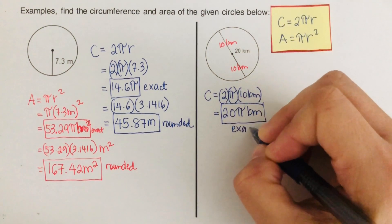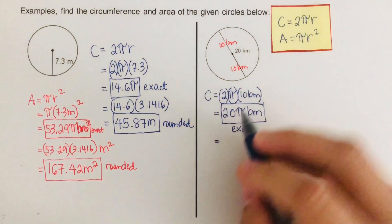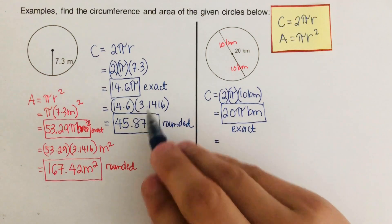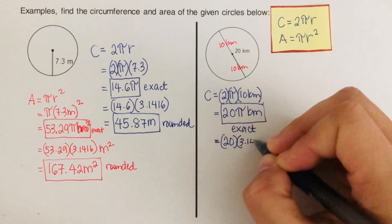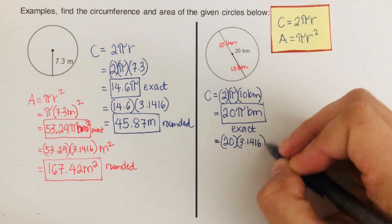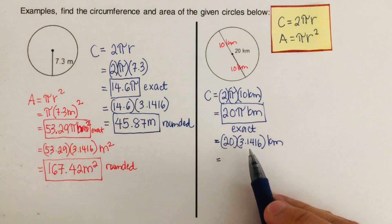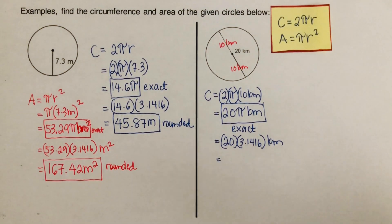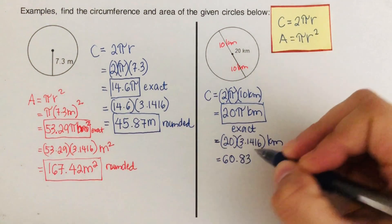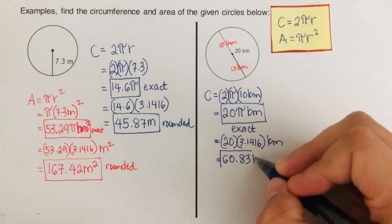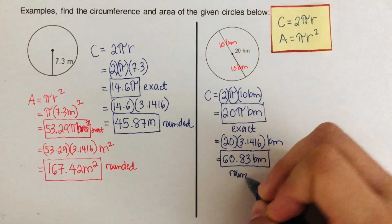To find the rounded value, we substitute pi with 3.1416: 20 times 3.1416, which comes out to approximately 62.83 kilometers. That is our rounded circumference value.